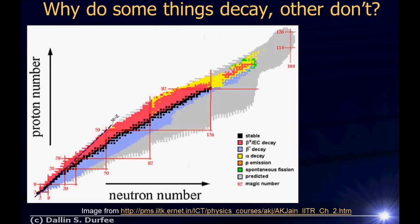So that's the basic idea of neutron emission — you just spit out a neutron. Now, why do some things decay and why do others not? Why are some nuclei stable and some aren't? Here is a chart of the nuclides showing the different nuclei. The black dots are ones that are stable, that don't decay. Then you see all the different colors of ones that beta decay, beta plus, electron capture, beta minus, alpha, proton emission, and so on.